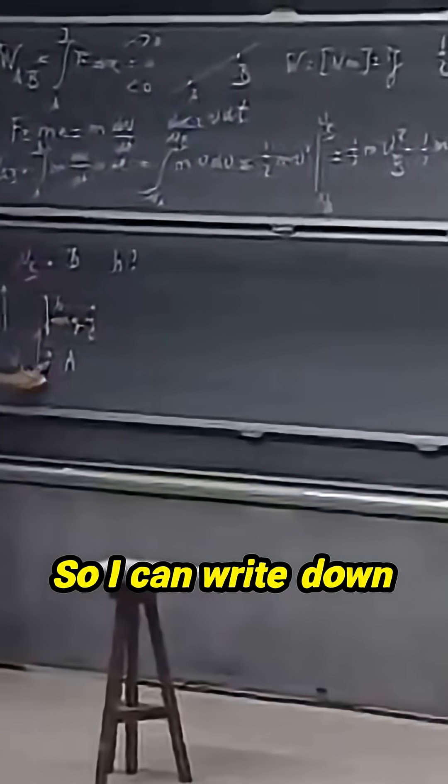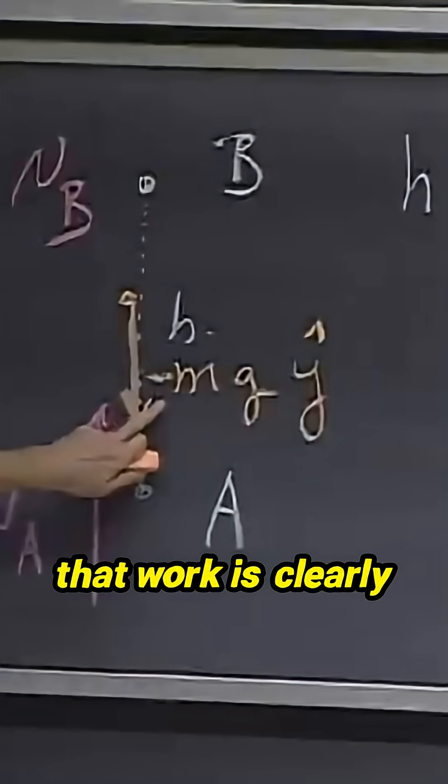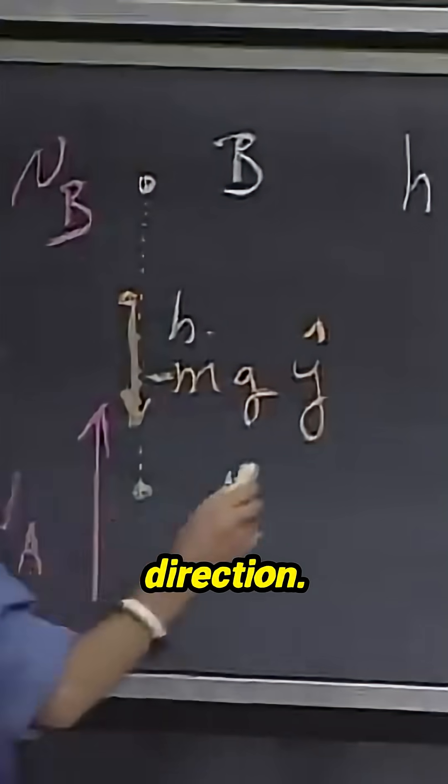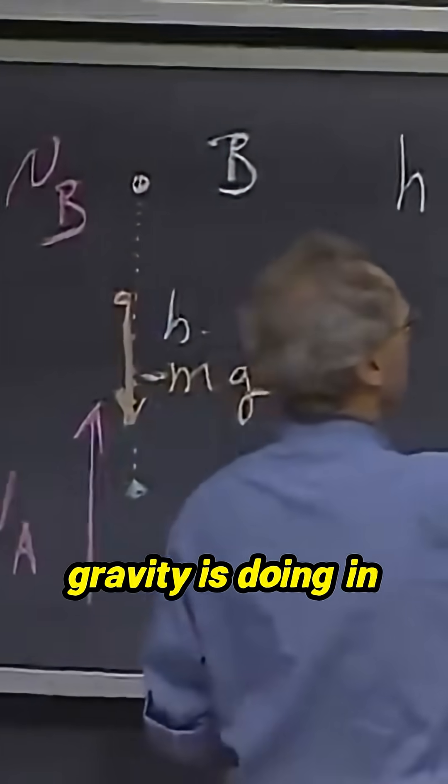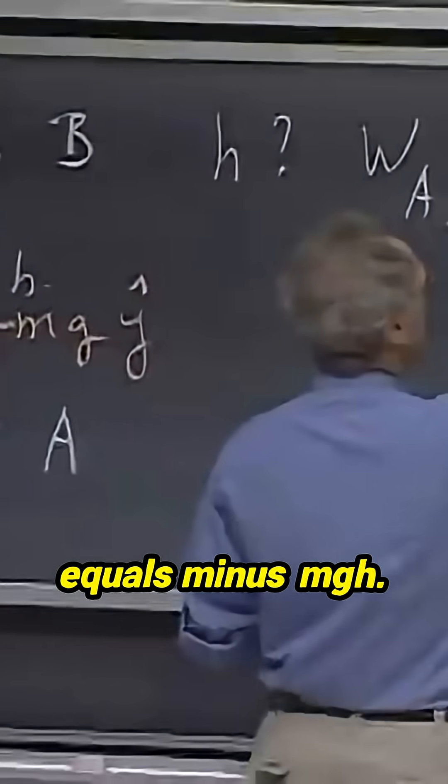So I can write down that the work that gravity is doing in going from A to B, that work is clearly negative. The force is in this direction, and the motion is in this direction.